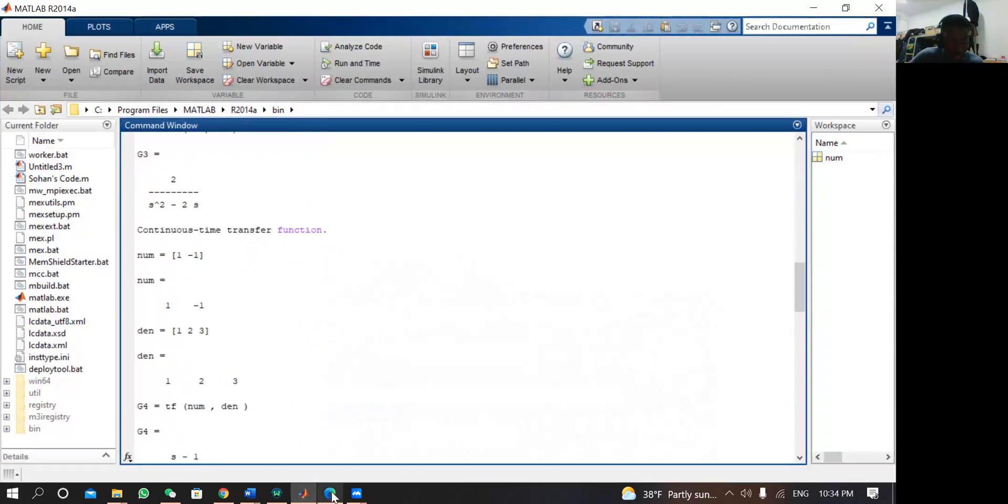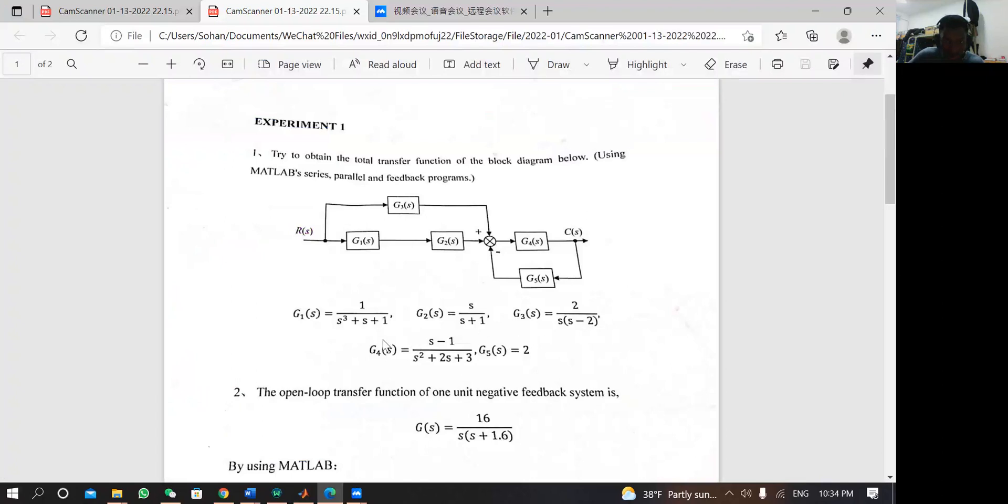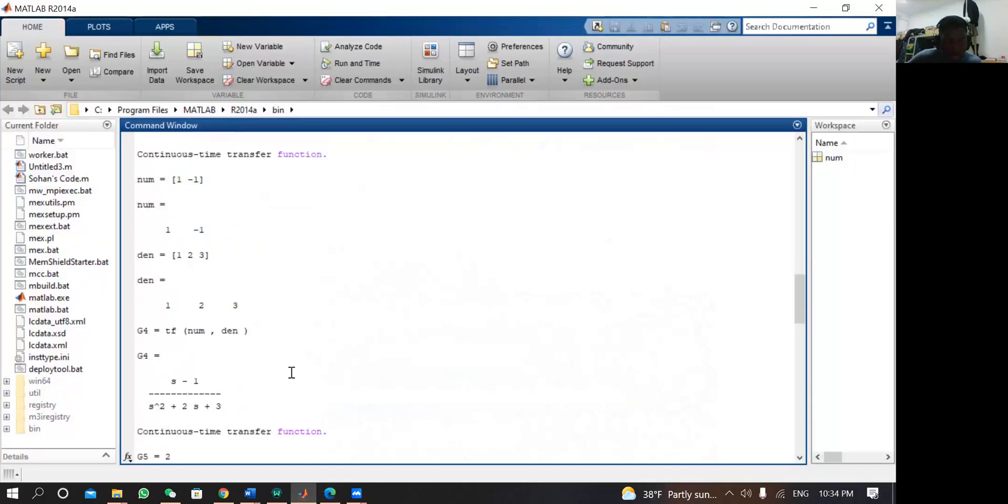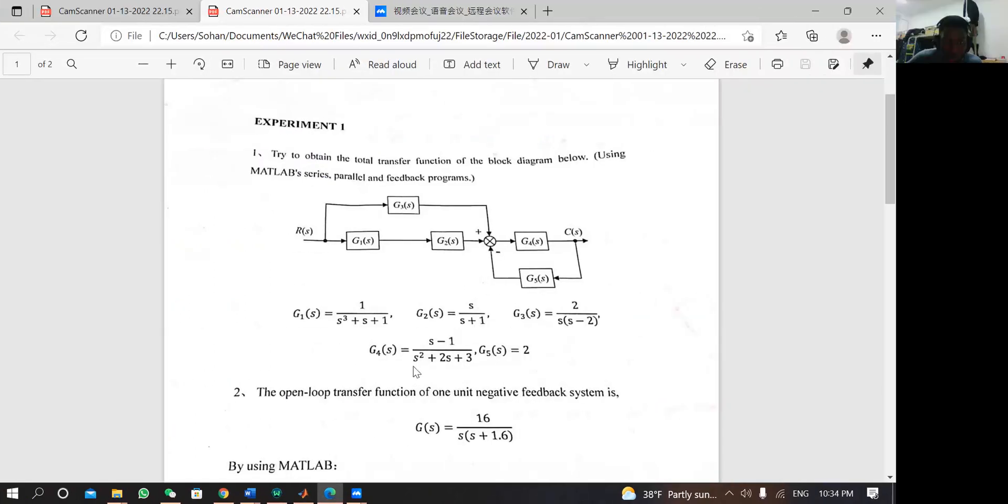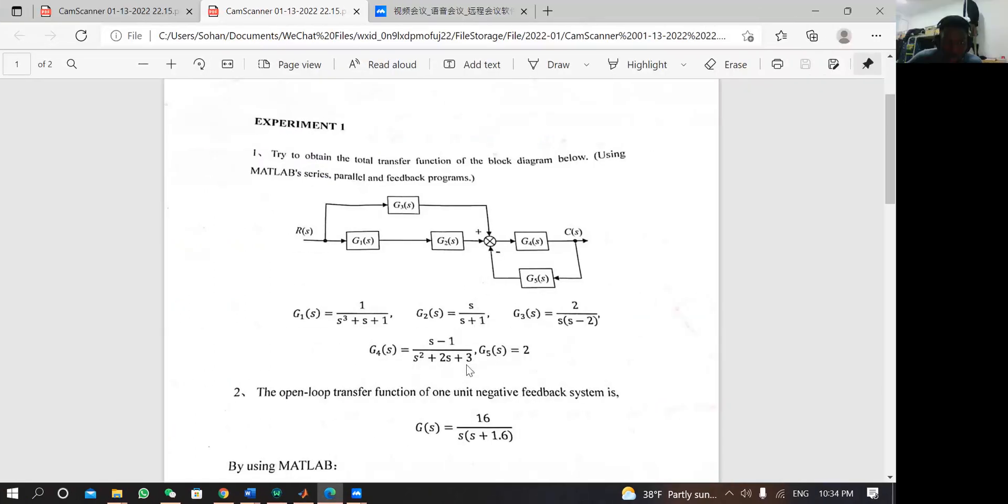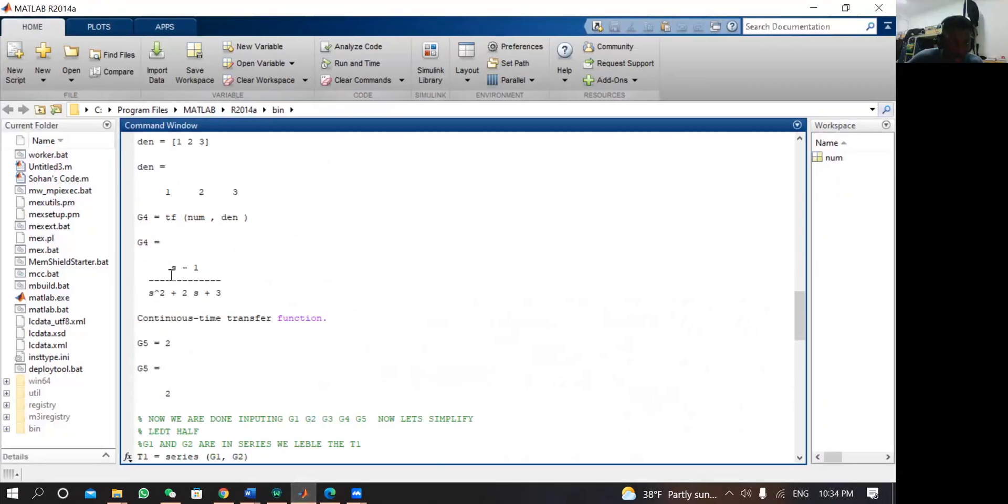The same is going to happen to G4. For G4, numerator coefficient of S is 1 and the constant is minus 1. Denominator is 1, 2, 3. So numerator 1, constant is minus 1, denominator is 1, 2, constant is 3. We end up having this function. We are just inputting the functions into MATLAB.